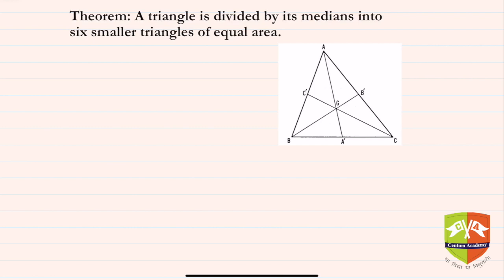We are going to discuss another theorem in this session. The theorem states: a triangle is divided by its medians into six smaller triangles of equal area. A median is a line segment which bisects the opposite side.